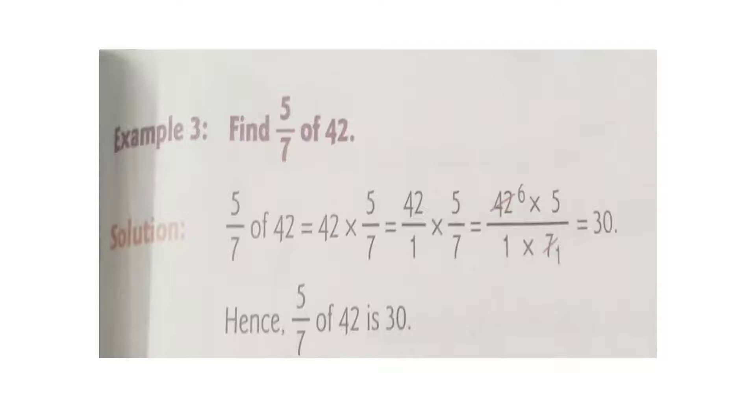Can we cancel 7 and 42? Yes, by table of 7: 7 ones are 7, 7 sixes are 42. Now we have 6 and 5 as numerator. Multiply the numerators: 6 fives are 30. Hence, 5 by 7 of 42 is 30.